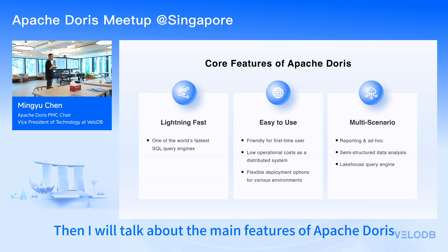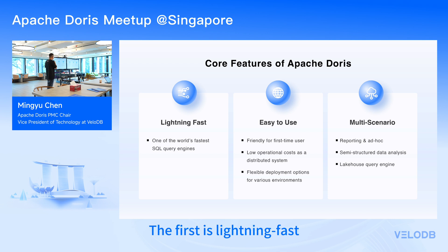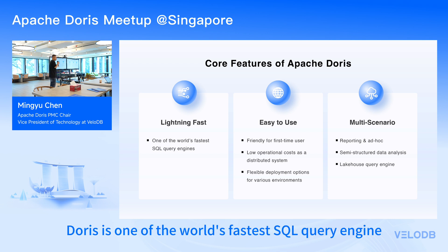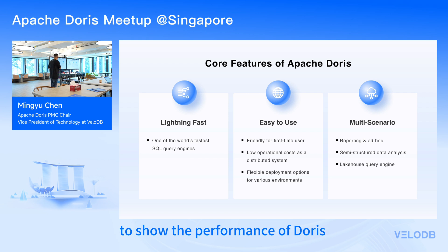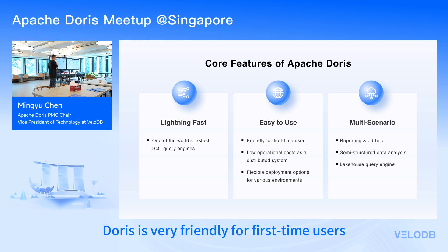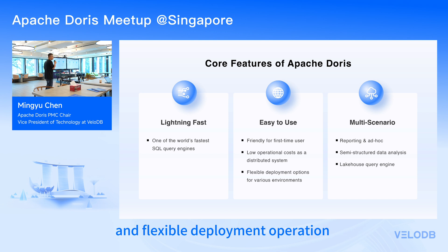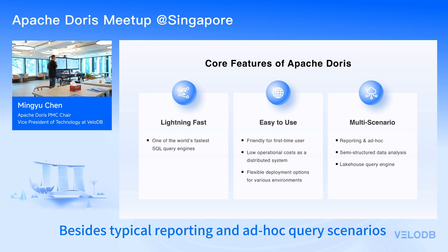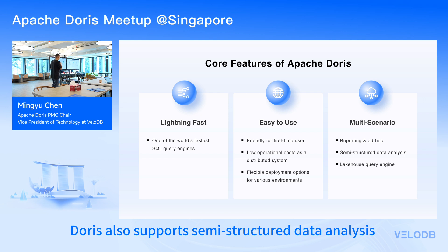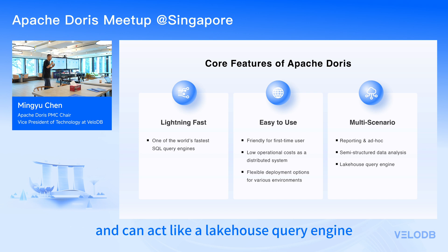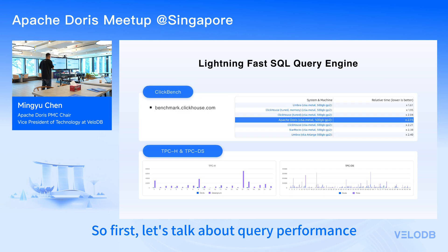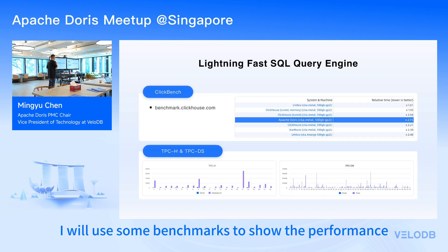The main features of Doris are: lightning fast, easy to use, and multi-scenario support. Doris is one of the world's fastest single query engines. I'll show some benchmarks to demonstrate the query performance. Another key aspect is ease of use — Doris is very friendly for first-time users, with low operational cost as a distributed system and flexible deployment for various environments.